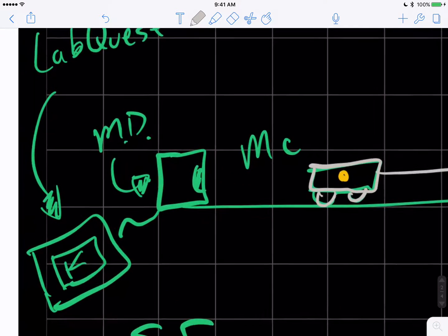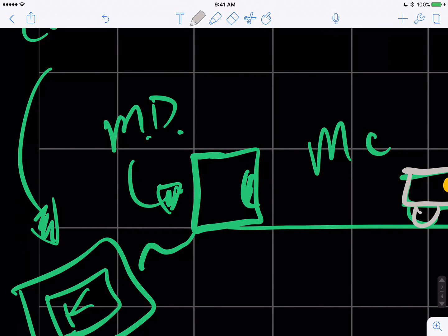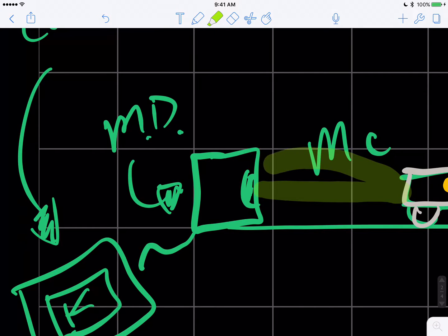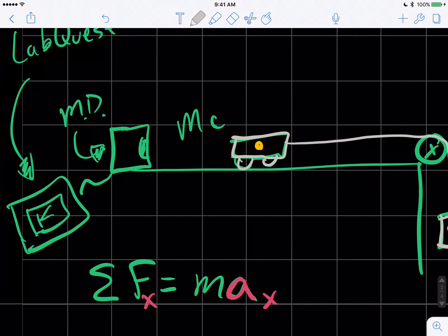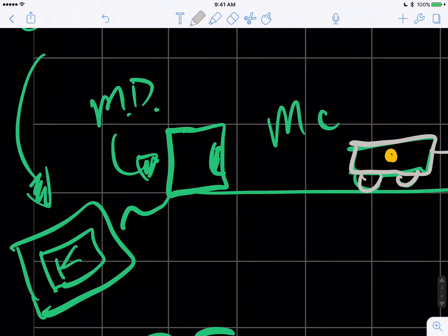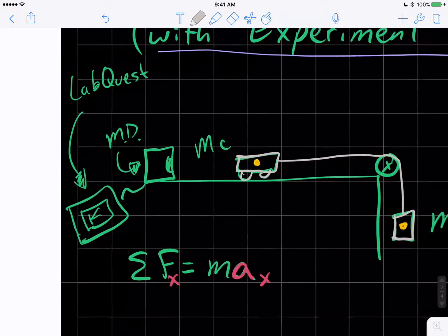Then we have a motion detector watching, which I'm labeling MD. That's sending out ultrasound, high-level sound waves that are echoing off of the cart and then bouncing back and being read by the motion detector. And it is telling the position of the cart and making a graph on a LabQuest screen that is a velocity versus time graph.